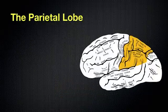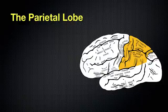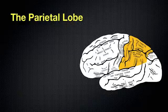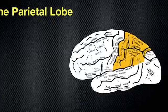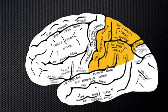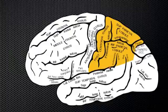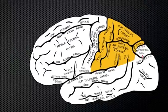The parietal lobe, as you can see here, is this region right here. We're starting at the central sulcus. It goes down. And on the inferior end, over here, we have the lateral cerebral fissure. And posteriorly, we have the parietal occipital fissure that separates the parietal lobe from the occipital lobe.